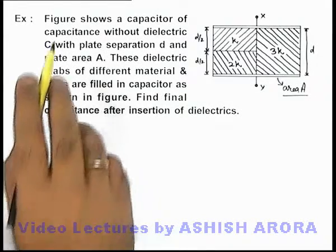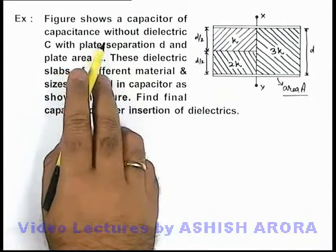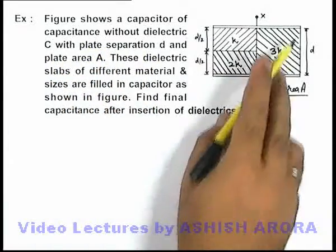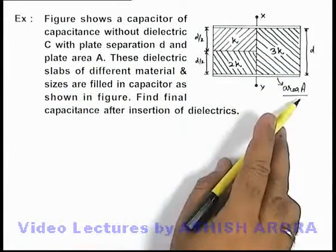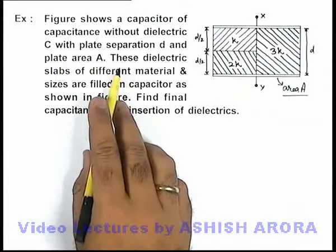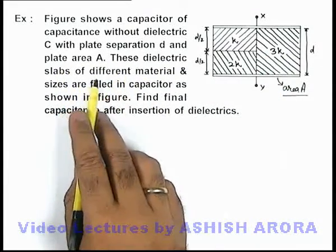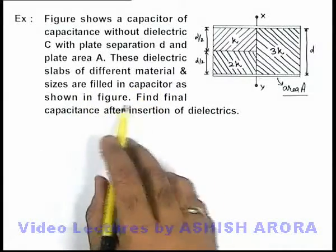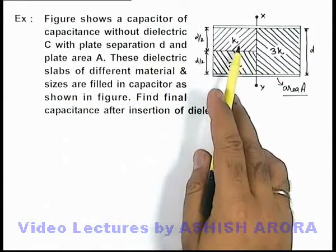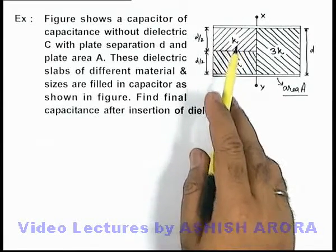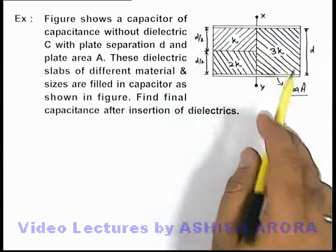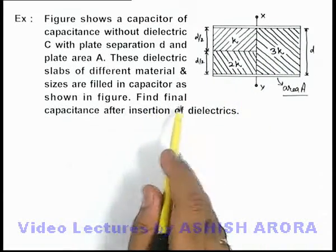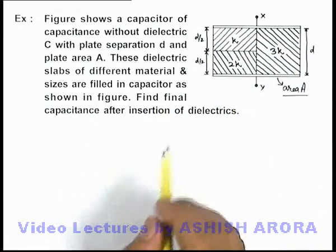In this example, the figure shows a capacitor of capacitance without dielectric C, with plate separation d and plate area A. Three dielectric slabs of different materials and sizes are filled in the capacitor — dielectric constants k, 2k, and 3k — filled in the manner shown in the figure. We are required to find the final capacitance after insertion of these dielectrics.